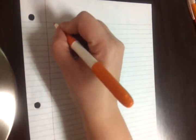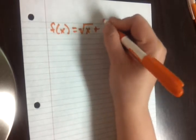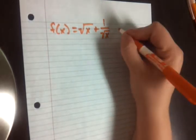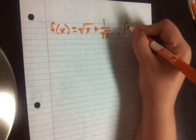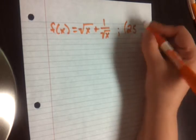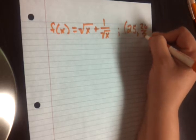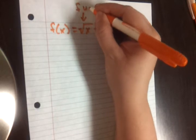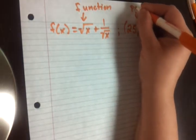Let's start with the function they gave us. They give us f(x) equals the square root of x plus 1 over the square root of x. And the point that they give us that we're going to be interested in a little bit later is (25, 26/5). So this is the function and this is the point.